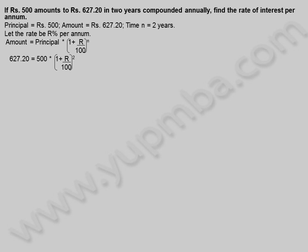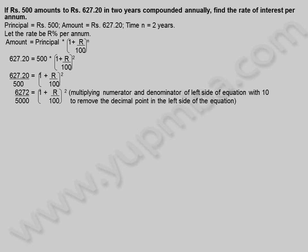627.20 is equal to 500 into 1 plus r divided by 100 whole square. 627.20 by 500 is equal to 1 plus r divided by 100 whole square. Multiplying by 10: 6272 by 5000 is equal to 1 plus r divided by 100 whole square.